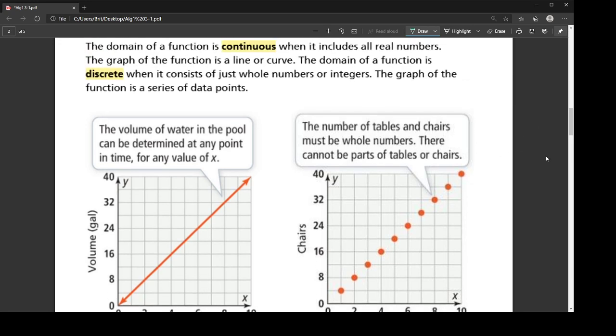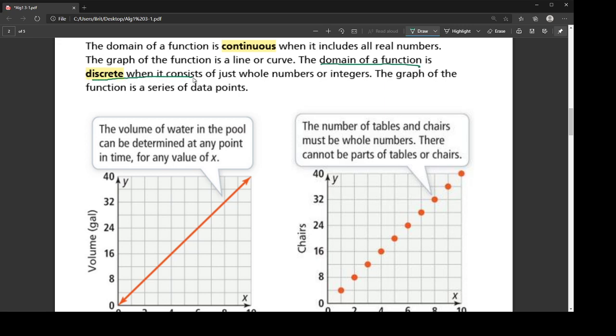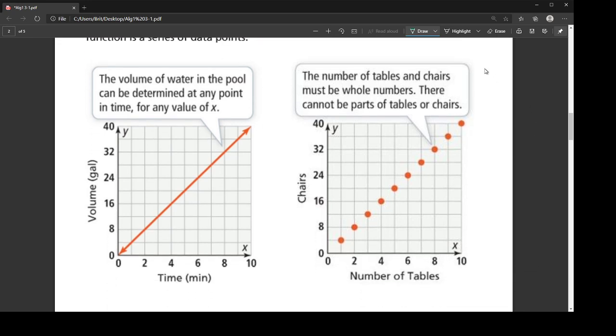Now, the other description that we're dealing with is what's called discrete. So the domain of a function is called discrete when it consists of just whole numbers or integers. So if we think about our example with the tables and chairs, if I were to try to graph this, here's my number of tables, and I can only have whole numbers of tables. And so what's ending up happening is I'm getting this dotted line that's occurring because I can't have a half of a table. The graph doesn't exist at a half of a table or at two and a half tables. It doesn't make sense. So whenever you get this weird kind of dotted line type of thing, you get what's called discrete.